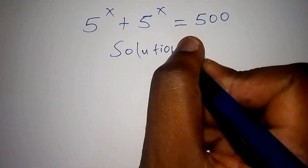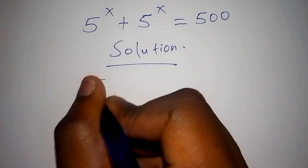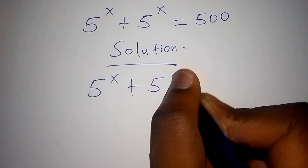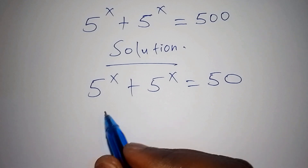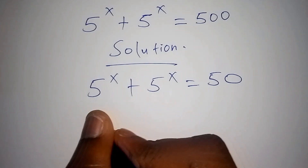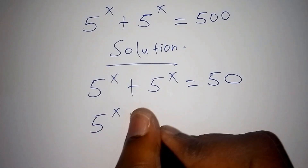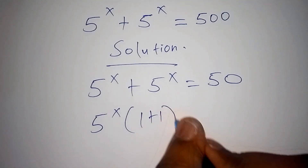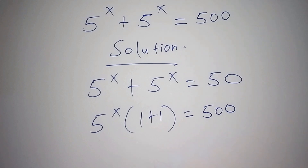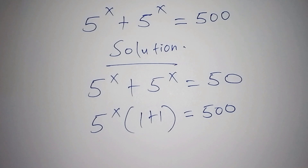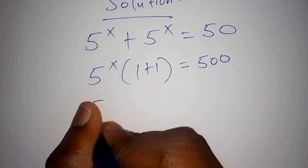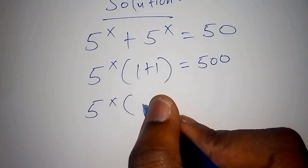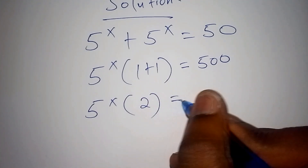On our solution, we shall solve it: 5 to the power of x plus 5 to the power of x equals 500. The first thing we need to do is factorize. So 5 to the power of x can be written as 5 to the power of x times bracket 1 plus 1, equals 500, because when we open the bracket we remain with 5 to the power of x plus 5 to the power of x. So 1 plus 1 is 2, giving us 5 to the power of x times 2 equals 500.